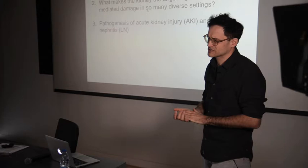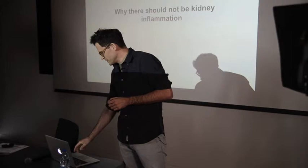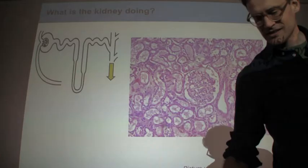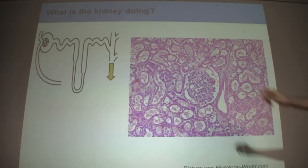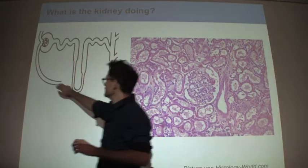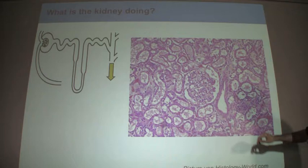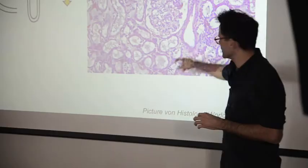Let's start with why there should not be kidney inflammation. To understand this, we have to look at kidney function. What you see here is a nephron, which is the smallest functional unit of the kidney. Blood enters here, it's filtered here, and the urine is produced and transported out of the body. This is what you see under the microscope — here you have this filter station, and then you have tubular systems which transport the urine.